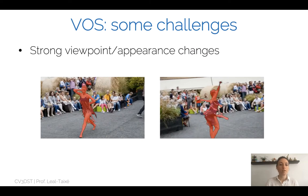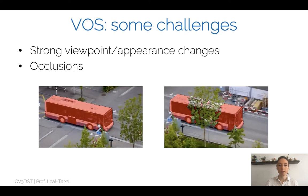One of the biggest challenges is a strong viewpoint or appearance change. We can see a sequence where a dancer is moving around in the scene — for some frames we see the front of the dancer, for others we see the back. The appearance completely changes, the viewpoint completely changes, but we still need to identify that this is the exact same instance. Another big challenge are occlusions. As soon as the bus is occluded by a tree, things become complicated because we need to realize the bus is cut into two distinct pieces with an occlusion in the middle.